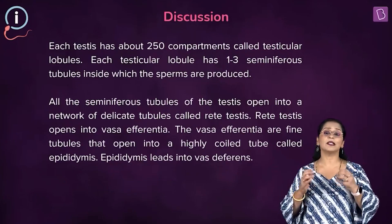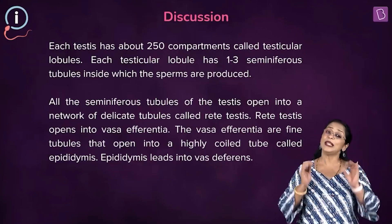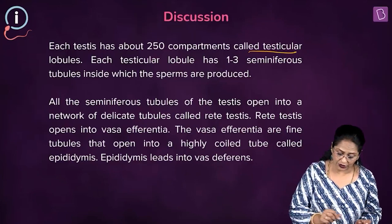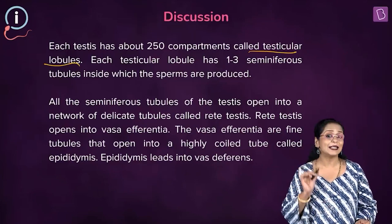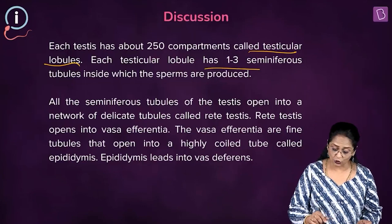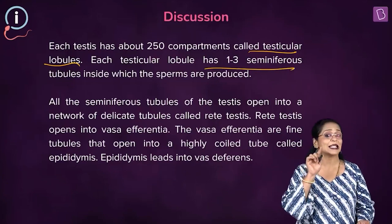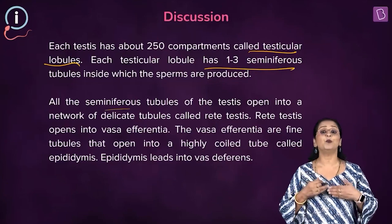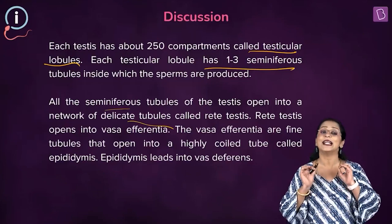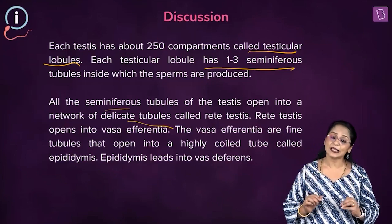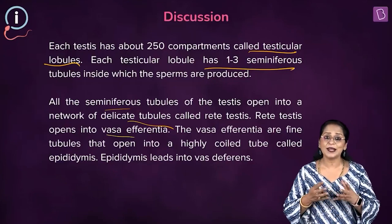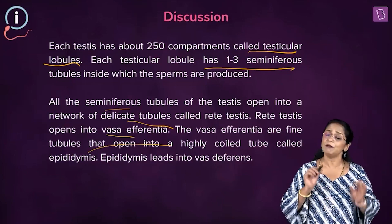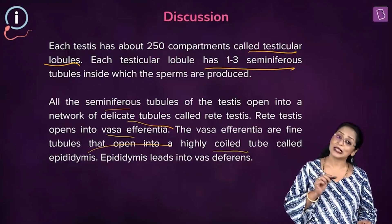Each testis is present in sac-like structures called the scrotum outside the body. Each testis is made up of about 200 to 250 small compartments called testicular lobules. Each compartment has about one to three highly coiled seminiferous tubules, and it is in these seminiferous tubules that sperms are formed. The seminiferous tubules open into a network of delicate tubules called the rete testis, which opens out into small ductules called vas deferentia.